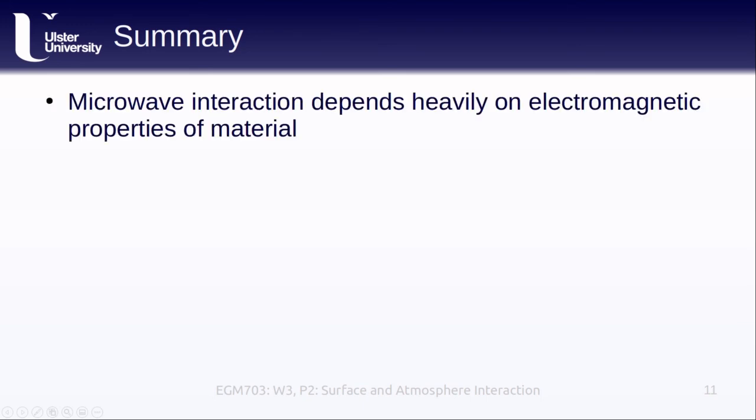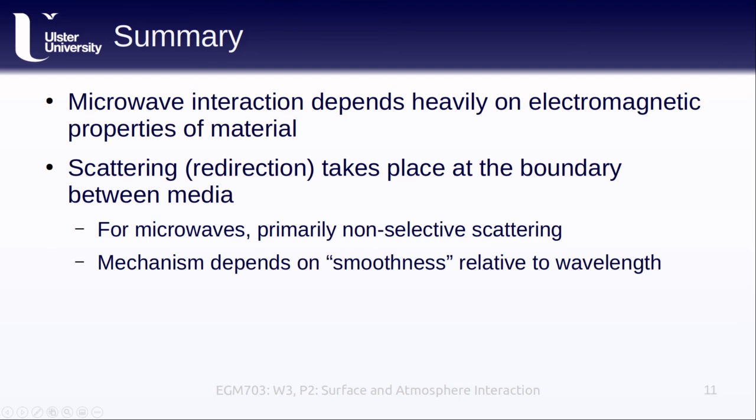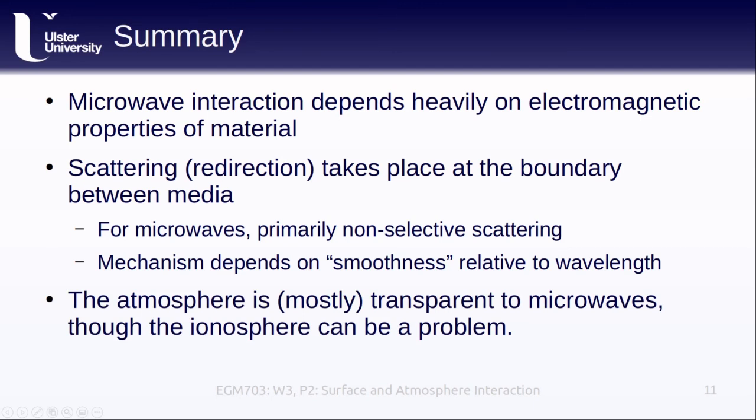In this lesson, we've discussed how microwave interaction with a material depends very heavily on the electromagnetic properties of that material. We've also recapped how scattering or redirection of electromagnetic radiation takes place at the boundary between different media, for example, at the Earth's surface. For microwaves, because of the long wavelengths involved, we see primarily non-selective scattering in the atmosphere, if we see it at all. But the exact mechanism that we see scattering on the surface is going to depend on the smoothness of the surface or boundary relative to the wavelength. Finally, we've seen how the atmosphere is mostly transparent to microwaves, although the ionosphere can pose a significant problem depending on our application.